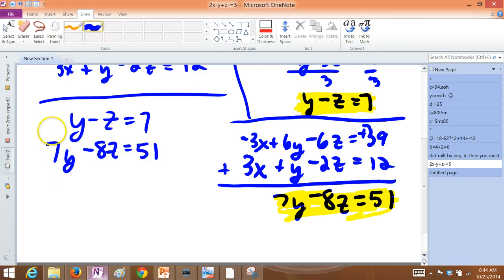So then we need to get the y's to cancel. Let's take this first equation times negative 7. You'll have negative 7y, positive 7z, and negative 49 on the right-hand side.